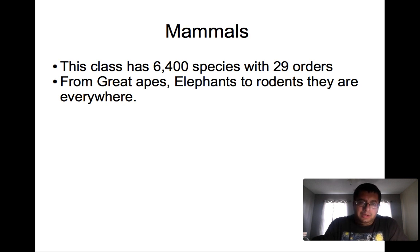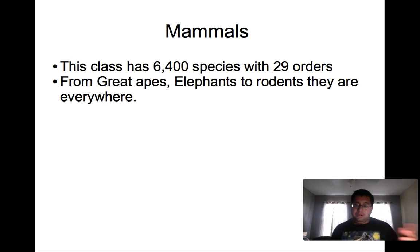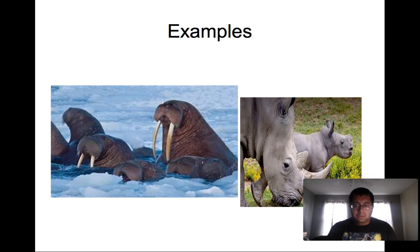Mammals — the last part. This class has 6,400 species with 29 orders. From great apes and elephants to rodents, they are everywhere. We see squirrels in the streets, deer in the woods, bears in the woods — mammals are everywhere. For example, we have the walrus and the rhinoceros. Even whales are mammals — the blue whale is the largest mammal ever recorded.